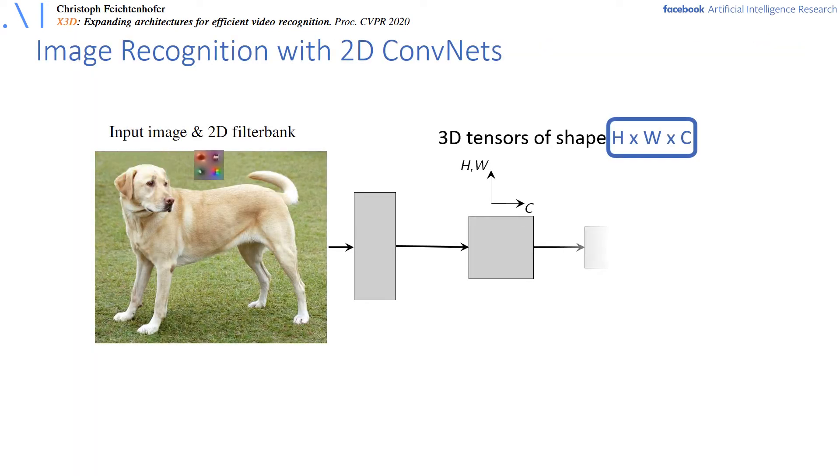For 2D tasks such as image or object recognition, it is common to apply layers of 2D filters to input images, which results in feature tensors of size h times w times c for the height, width and the number of channels of the features.